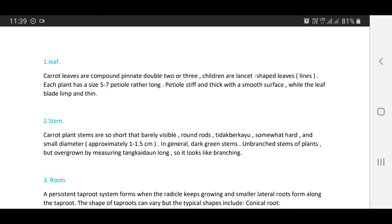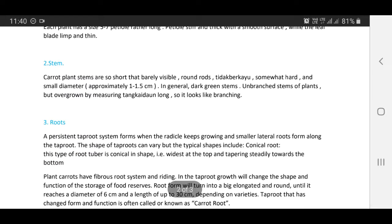A persistent taproot system forms when the radicle keeps growing and smaller lateral roots form along the tap root. The shape of taproots can vary, but the typical shapes include conical root. This type of root tuber is conical in shape, widest at the top and tapering steadily towards the bottom. Plant carrots have fibrous root system and ridging.